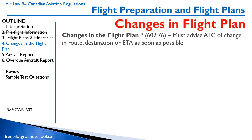Let's talk about changes to a flight plan. You have to advise air traffic control of a change in a flight plan as soon as possible. For example, in this previous scenario going Thunder Bay to Winnipeg via Sioux Lookout — if all of a sudden you want to go direct, you let ATC know right away so that if you go missing, they're not going to Sioux Lookout and starting searching for you there. They'll know you're somewhere directly in between.